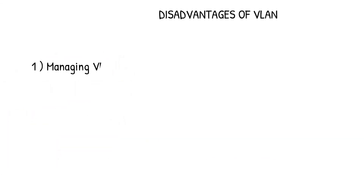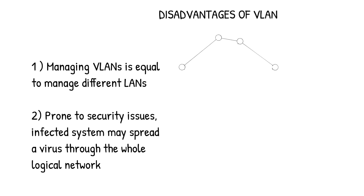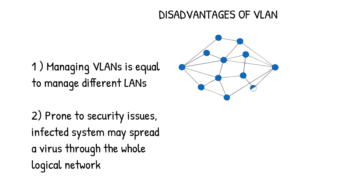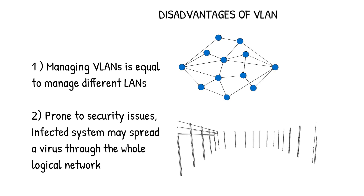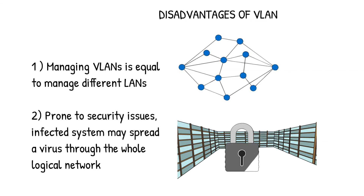Disadvantages of VLAN: Managing VLANs is equal to managing different LANs, and each switch port must be configured to access specific VLANs or be set as a trunk. VLANs are prone to security issues like man-in-the-middle (MIM) attacks and sniffing. There is also a high risk of virus issues, because one infected system may spread a virus through the whole logical network.